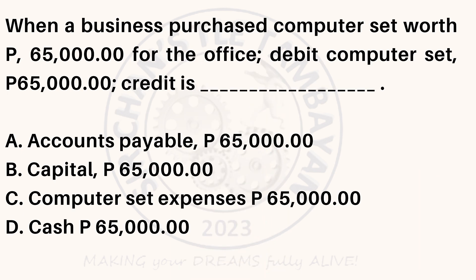When a business purchased a computer set worth $65,000 for the office — debit: computer set $65,000 — the credit is: A. Accounts payable, $65,000. B. Capital, $65,000. C. Computer set expenses, $65,000. D. Cash, $65,000.